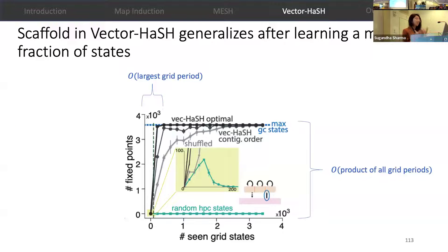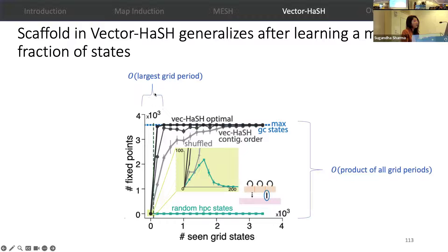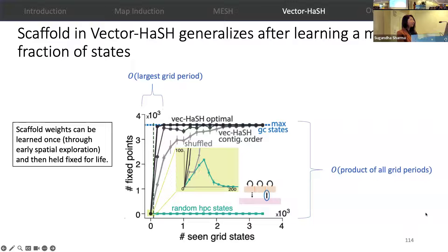VectorHash inherits all properties of MESH. In addition, it shows a strong generalization property in the scaffold, where the scaffold needs to be trained on only a small, vanishing fraction of the grid coding states for it to stabilize all grid coding states as fixed points. Thus, it generalizes to states it hasn't seen before. We can think of the scaffold weights as weights that can be learned once through early spatial exploration and then held fixed for life.